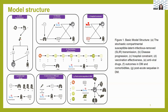For the basic model structure, part A is the SLIR transmission I mentioned, B is the disease progression, C is hospital resource constraints, D is vaccination effectiveness, E is antiviral drugs, F is outcomes in diabetes and comorbidities, and G is post-acute sequelae in diabetes. The main focus of the study is parts F and G.